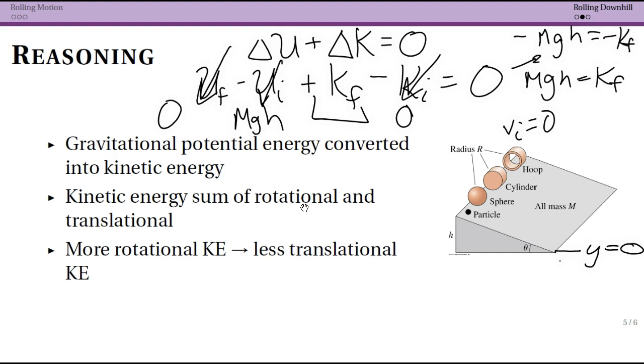So mathematically, that's what this statement says. But now we say that K_final is equal to one half rotational, which was I omega squared, plus translational one half m v_cm squared.